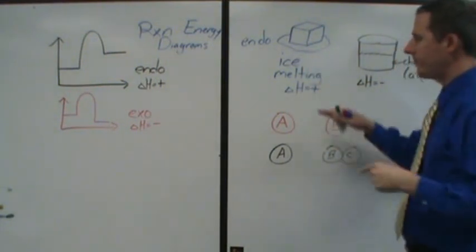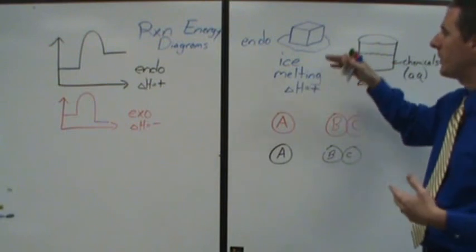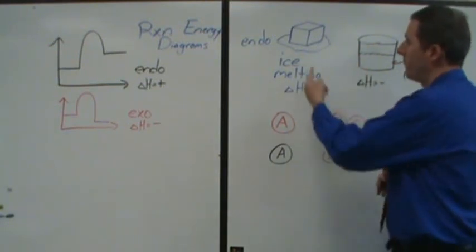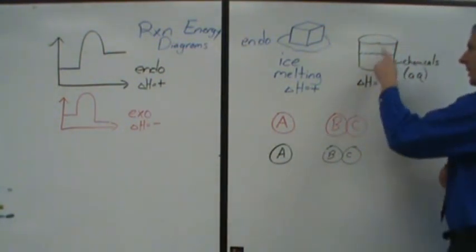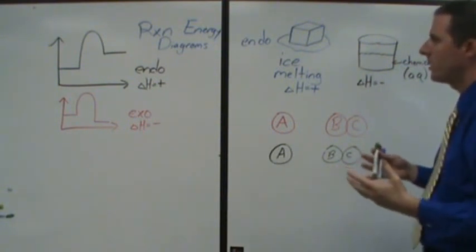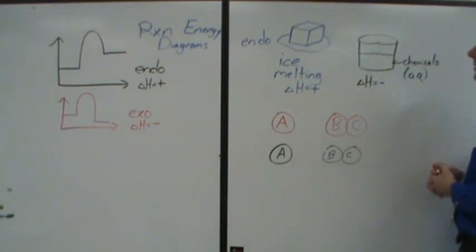For the ice cube melting the enthalpy change is positive, it's an endothermic process, and to most people that makes perfect sense. You're putting energy to the ice cube in order to get it to melt. This also tends to make sense to most people. When you're doing a chemical reaction and the water heats up that's exothermic because your chemicals are releasing energy.